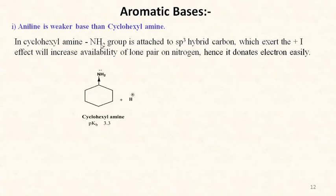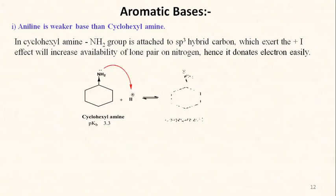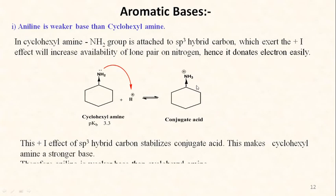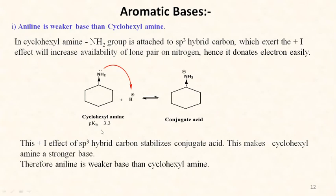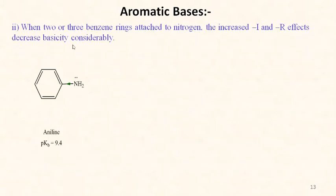In cyclohexylamine, the NH₂ group is attached to an sp³-hybridized carbon of the cyclohexyl ring, which shows an electron-donating inductive effect that increases electron density on nitrogen, making it easily available for donation. The conjugate acid is stabilized by the electron-donating inductive effect. Therefore cyclohexylamine (pKb 3.3) is a stronger base than aniline (pKb 9.4).